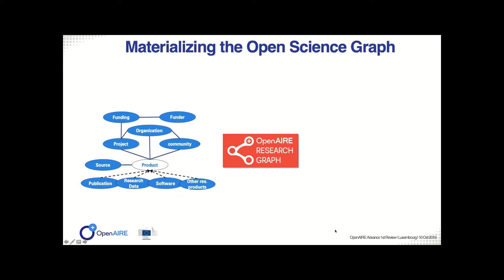For each product we also keep track of the source — where the product has been stored or from which we collected the metadata. Then we have projects, which are linked to funding and funding streams and the funder. For example, the funder being the European Commission, the funding being H2020, and the project being OpenAIRE Advance. Then we have organizations, which are linked to projects because they are beneficiaries, but they're also linked directly to products. We associate a product to an organization if an author of that product is affiliated to the organization — this is very useful for monitoring.